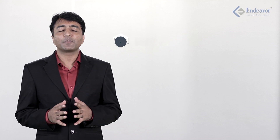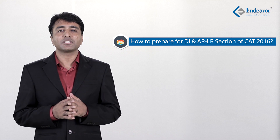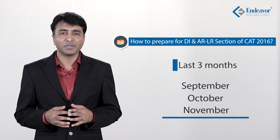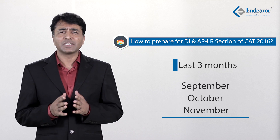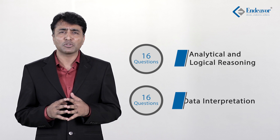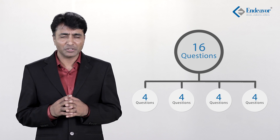Let us discuss how to prepare for DI, LR and AR section of CAT 2016 in the last 3 months - September, October and November. Let us first start with understanding the section as conducted in CAT 2015. There were 16 questions based on analytical and logical reasoning and 16 questions based on DI. These 16 questions were divided into 4 sets, each of 4 questions.